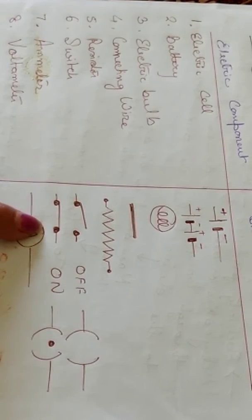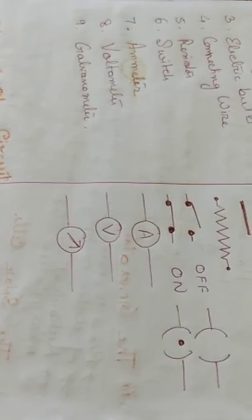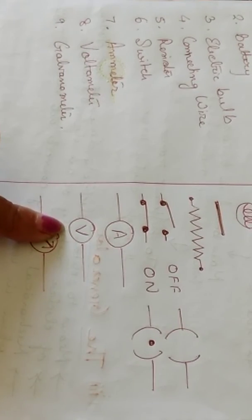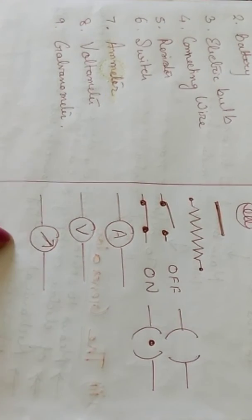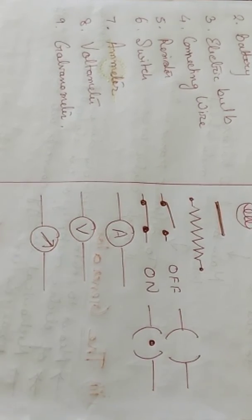Then ammeter is shown by capital letter A within a circle. Then voltmeter, capital V within a circle. Galvanometer, an arrow within a circle. These are the standard symbols of the electric components.